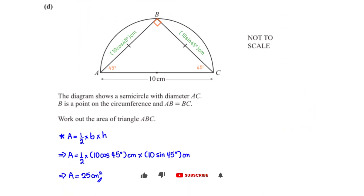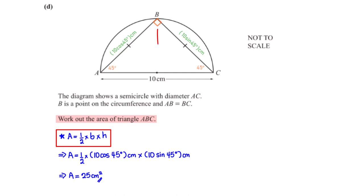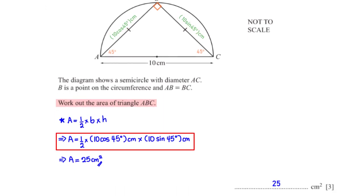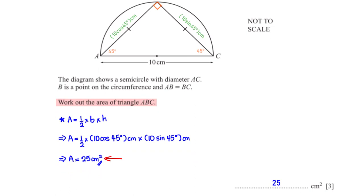The diagram shows a semicircle with diameter AC. B is a point on the circumference and AB equals BC. Work out the area of triangle ABC. An angle formed in a semicircle is 90 degrees. Since the triangle is isosceles, the base angles are equal; subtracting 90 from 180 and dividing by 2 gives 45 degrees each. Using SOHCAHTOA with the known length of AC, we get the area to be 25 cm².